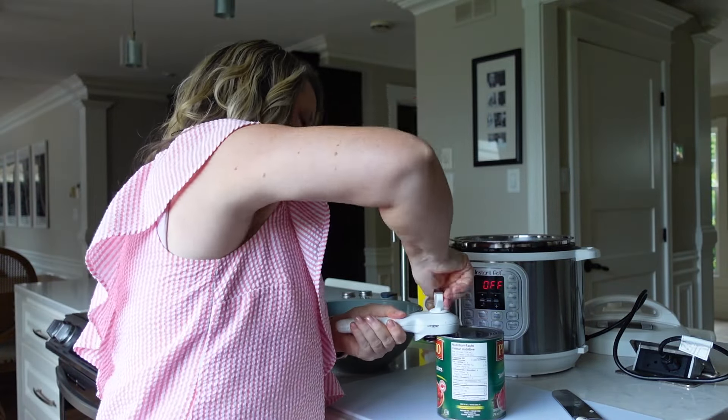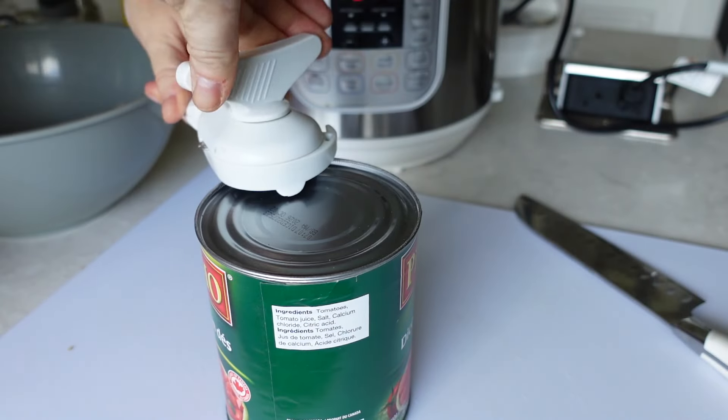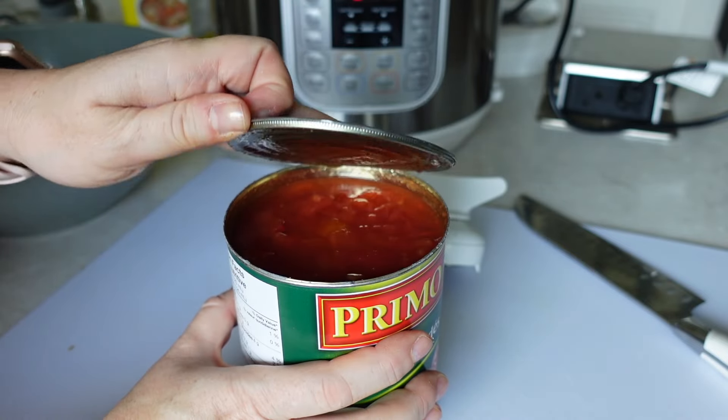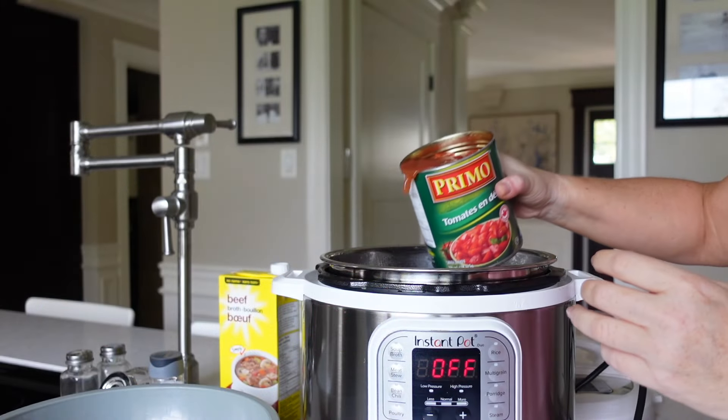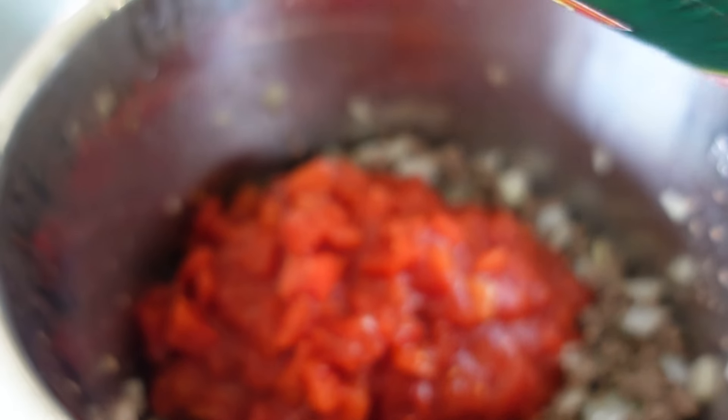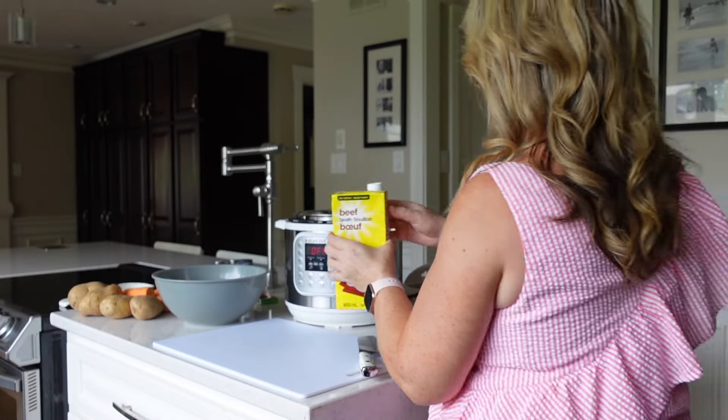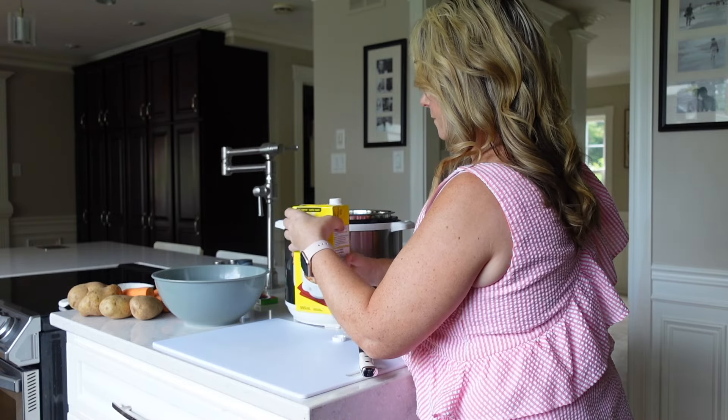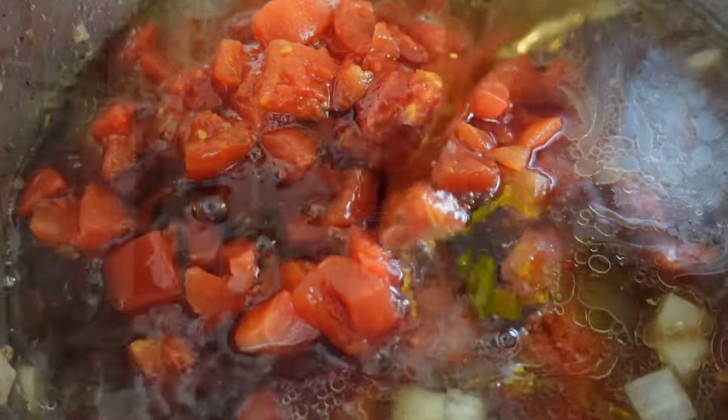Now at this point you could start to chop your other vegetables but I decided that I didn't want my ground beef to get overcooked just sitting in the pot so I decided to add all of my wet ingredients right now. So I added the diced tomatoes and then my beef broth and then I also threw in two beef bouillon cubes.